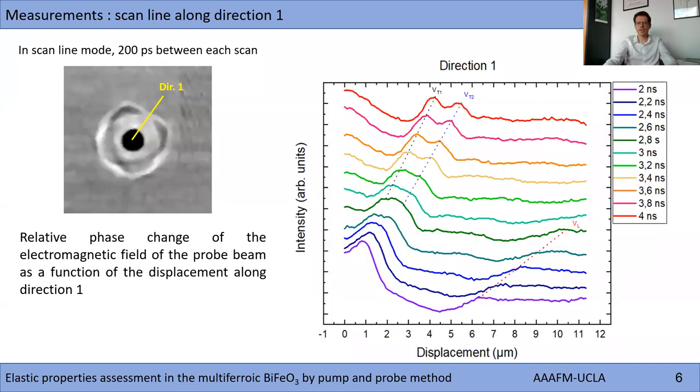The next figure presents the relative phase change of the electromagnetic field of the probe along scan direction 1 as a function of the probe position and for several probe time delays. One can observe in this figure three peaks whose positions evolve as a function of the probe delay. These peaks correspond to wave amplitude maxima and three distinct propagation speeds.